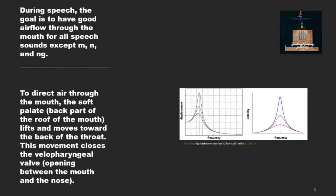To direct air through the mouth, the soft palate — the back part of the roof of the mouth — lifts and moves toward the back of the throat. This movement closes the velopharyngeal valve, the opening between the mouth and the nose.